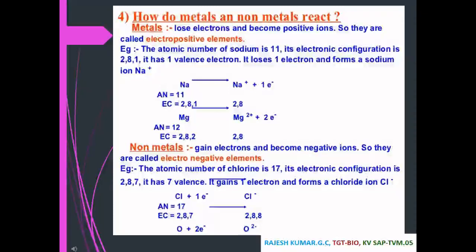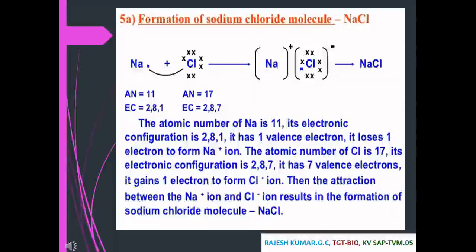Non-metals gain electrons and become negative ions, so they are called electronegative elements. For example, chlorine has atomic number 17 and electronic configuration 2,8,7 — it has seven valence electrons, gains one electron, and forms Cl⁻. Formation of sodium chloride (NaCl): Na + Cl gives NaCl. Sodium (atomic number 11, configuration 2,8,1) loses its one valence electron to form Na⁺, and chlorine (atomic number 17) gains one electron to form Cl⁻.